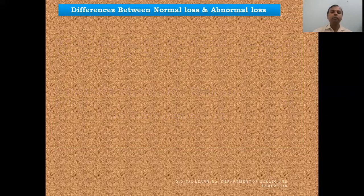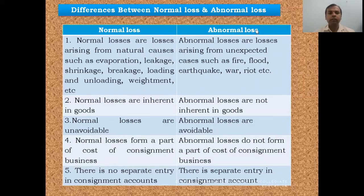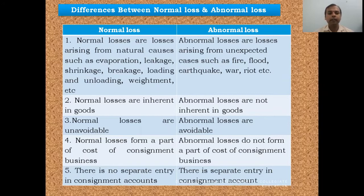Now we will look at the differences between normal loss and abnormal loss. First difference — meaning: normal losses are those arising from natural causes such as evaporation, leakage, breakage, shrinkage, loading and unloading, and weightment. Abnormal losses are those arising from unexpected causes such as fire, flood, earthquake, war, etc. Second difference: normal losses are inherent in goods by nature, whereas abnormal losses are not inherent in goods.